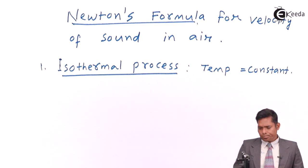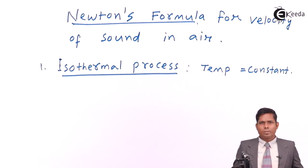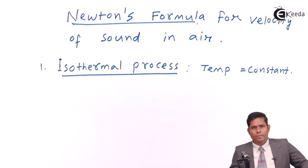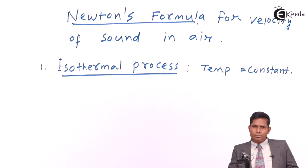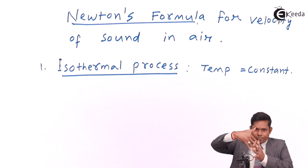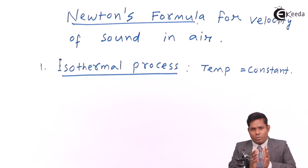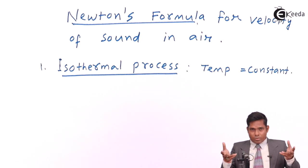This is a process where temperature remains constant. Newton says that when compression is formed, the molecules come closer and heat is generated. During rarefaction, cooling occurs. So with alternate compression and rarefaction, heat is generated then it cools down repeatedly. He said the process has to be isothermal — during compression, whatever heat is gathered, it is released to keep the temperature constant. During rarefaction, it takes heat from outside and keeps the temperature the same.